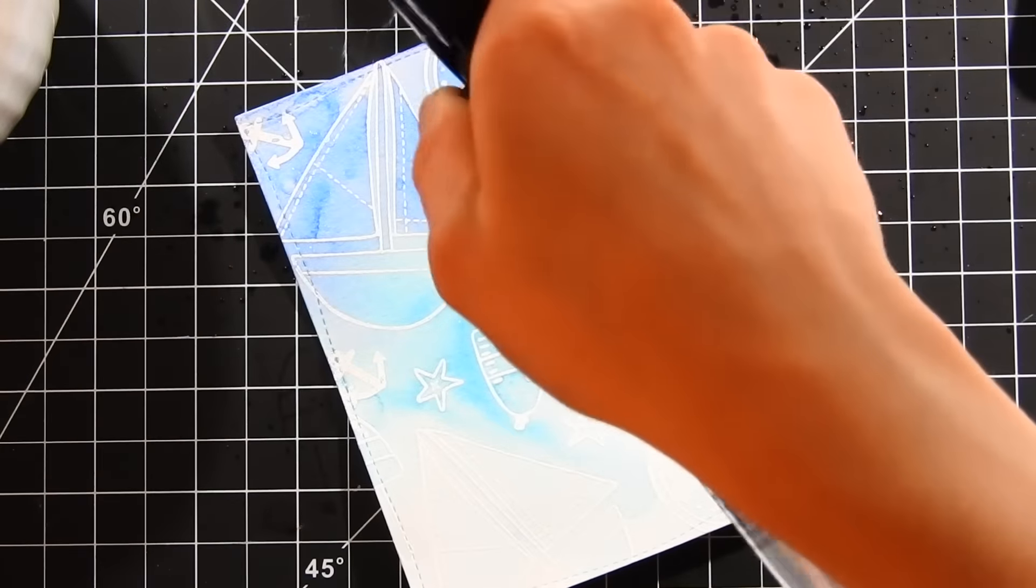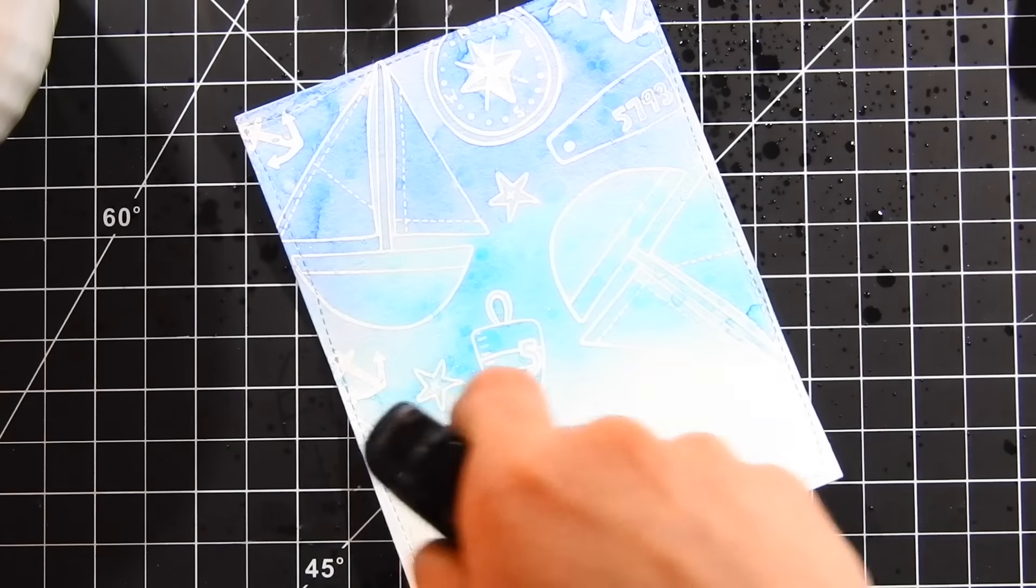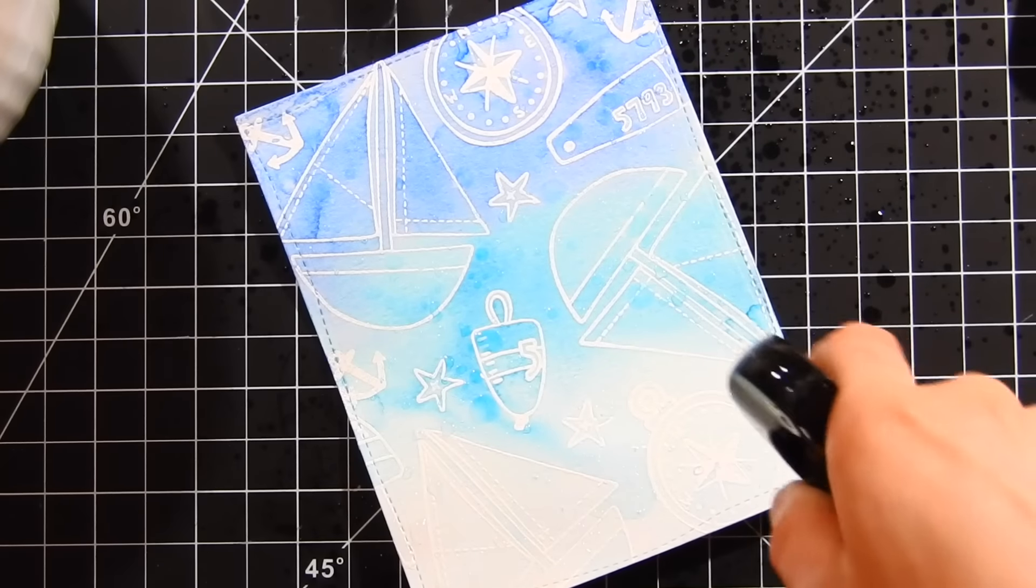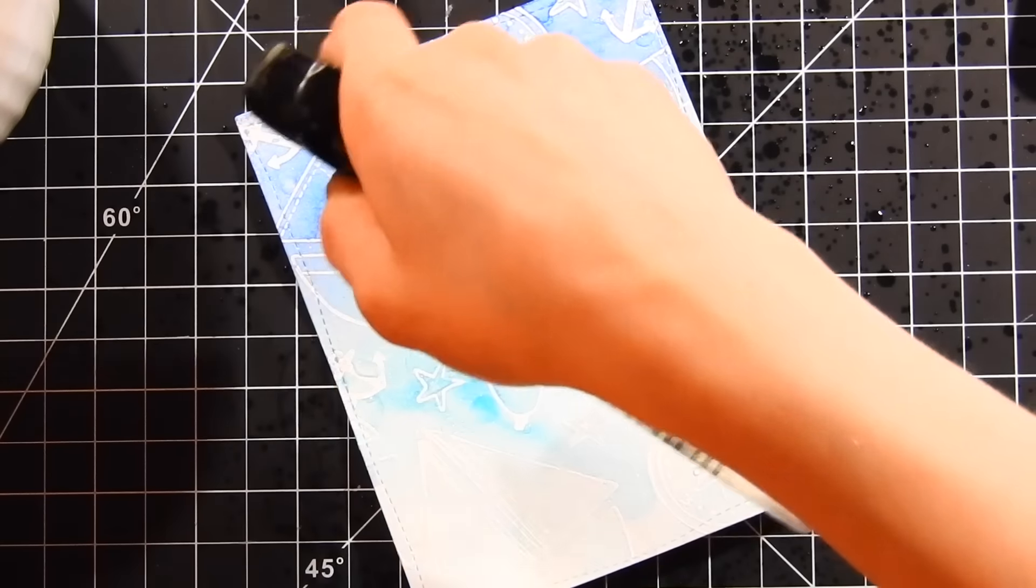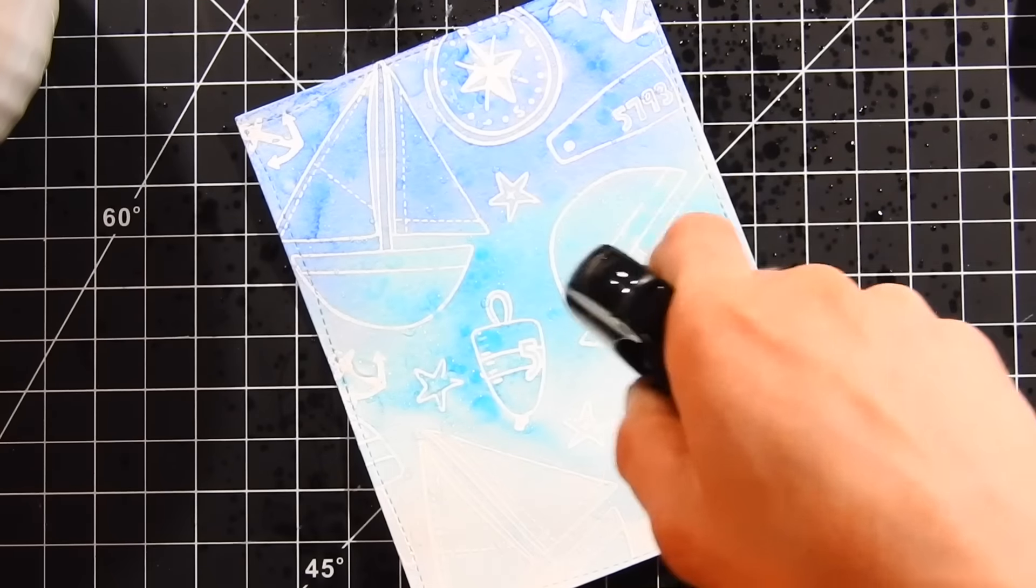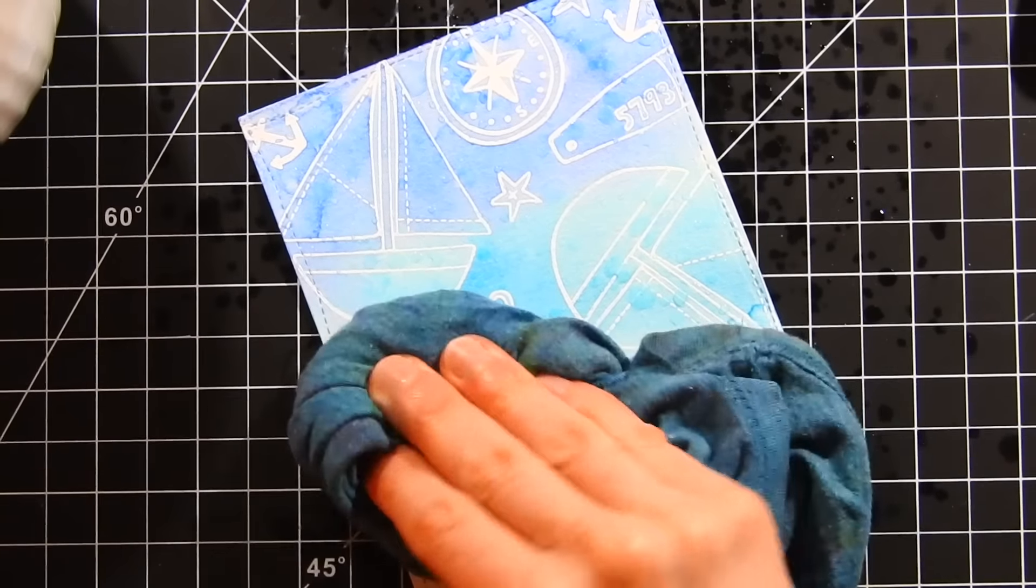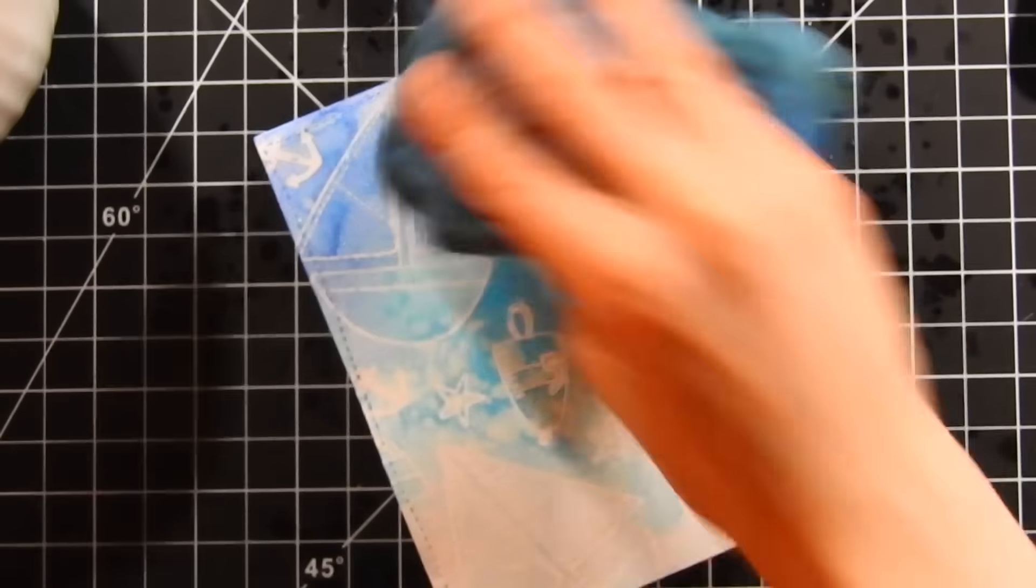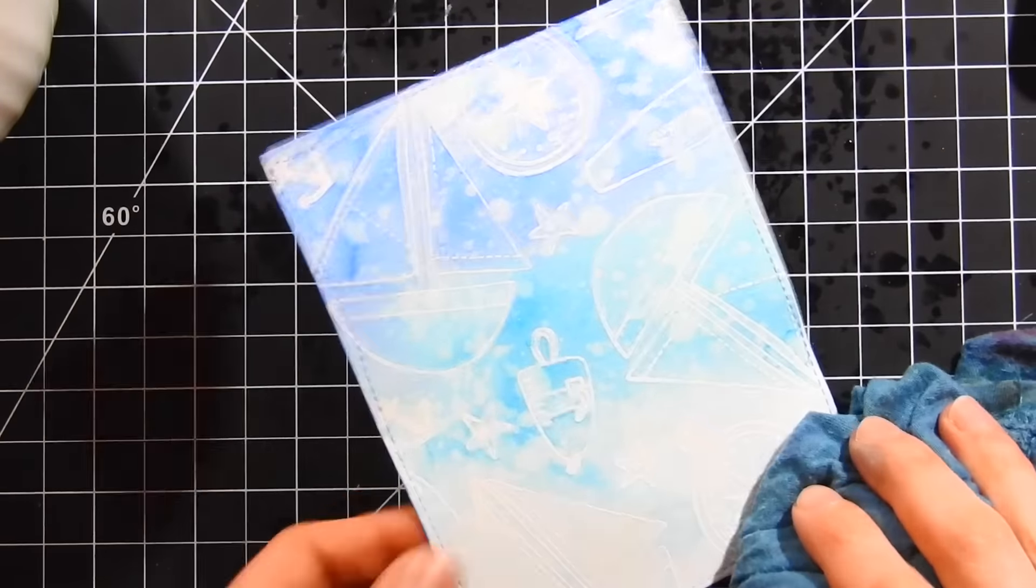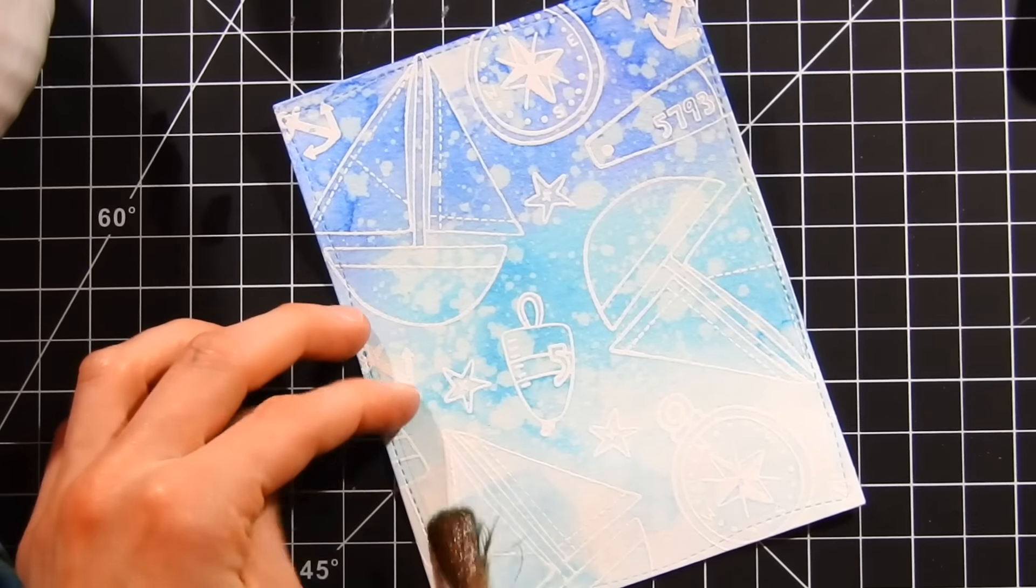So here I'm taking some distress sprayer and I'm adding some water droplets all over this panel. This is going to give me some great texture to this card. I let it sit for about 30 seconds or so, and then I'm going to go ahead and dab it up with a rag, and this is going to create some gorgeous water splatters—really pretty.